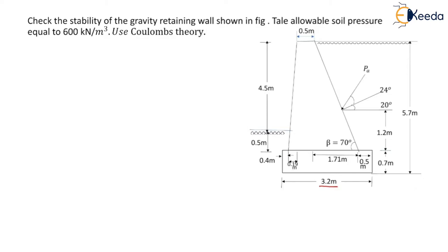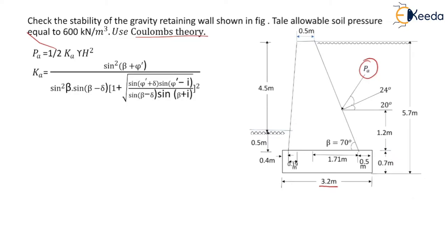Let us start with the stability checks of the retaining wall. Active pressure PA is obtained from the formula: PA equals half KA gamma H squared. We are supposed to use Coulomb's theory. As per Coulomb's theory, the value of KA is obtained as KA equal to sin squared (beta plus phi dash) divided by sin squared beta into sin(beta minus delta) into the bracket 1 plus under root of [sin(phi dash plus delta) into sin(phi dash minus i)] upon [sin(beta minus delta) into sin(beta plus i)], all squared.